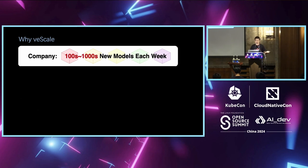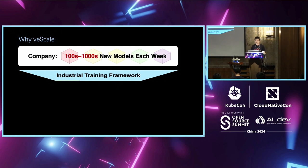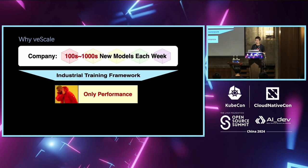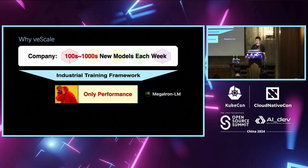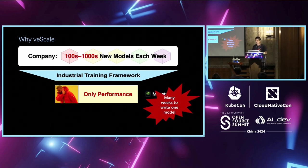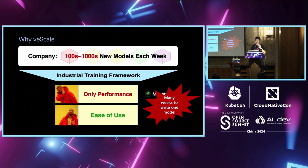Before V-Scale, there were a lot of training frameworks on the market, and most of them focus on performance. That is great, but the downside is that they are often very hard to use. One example is Megatron — we usually need to spend many weeks to write just one model with it. Therefore, we wanted to develop our own framework that favors not just performance, but also ease of use.